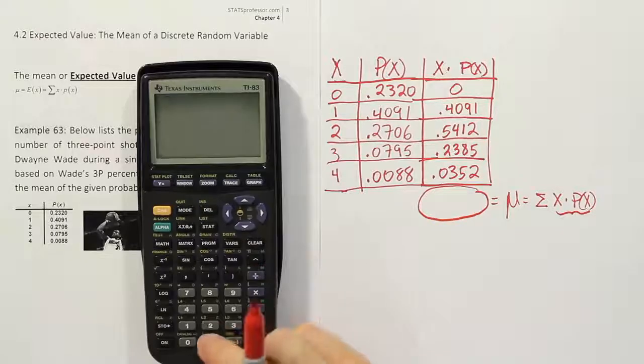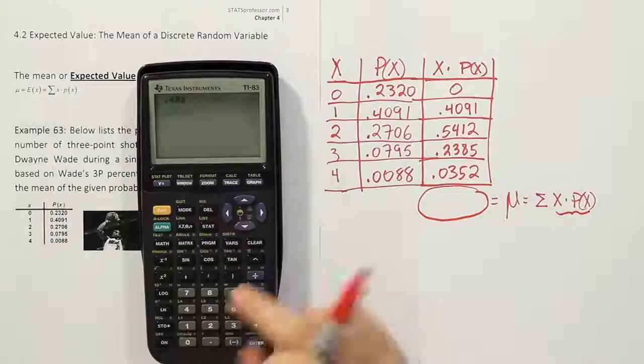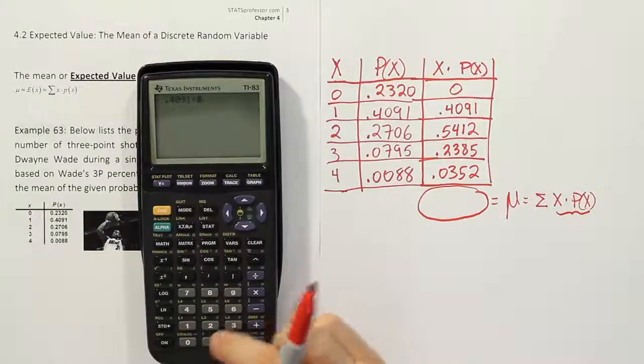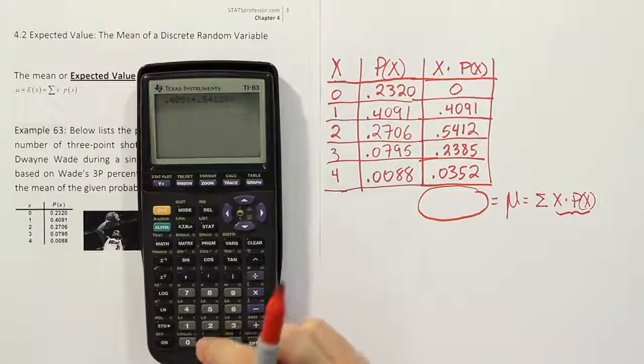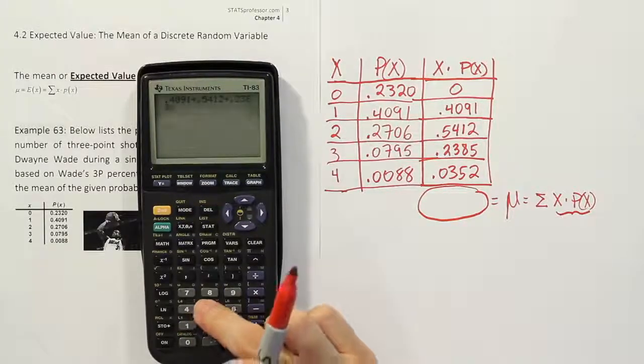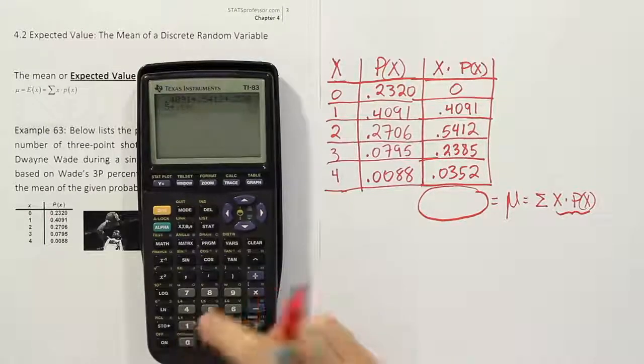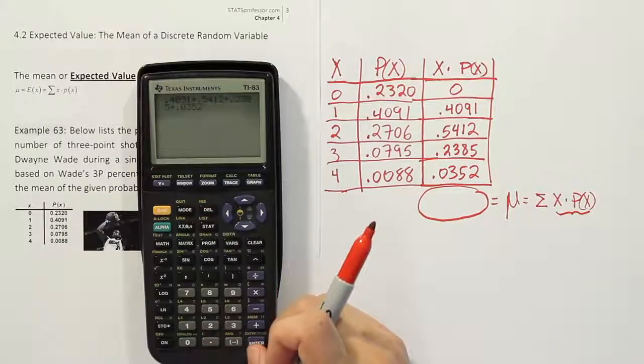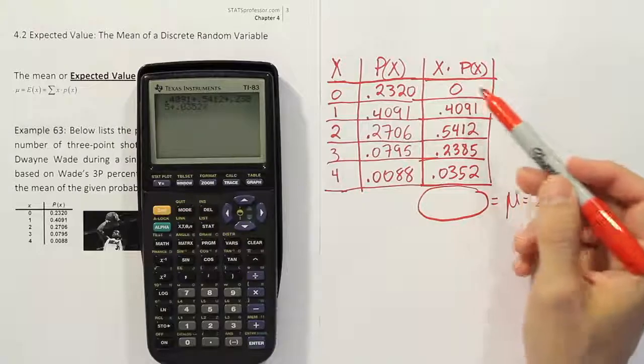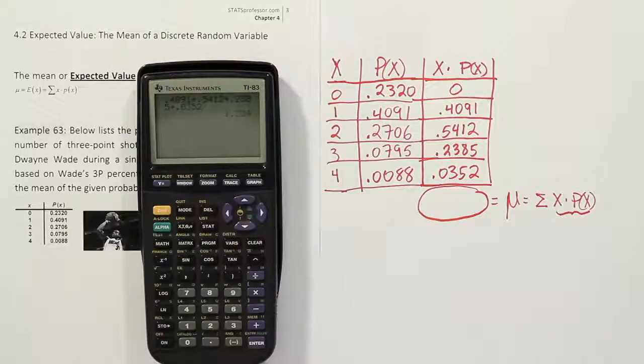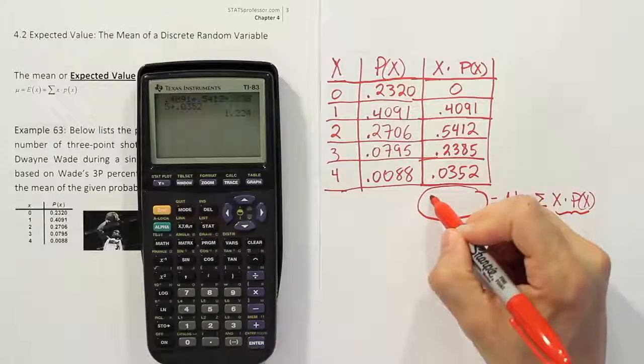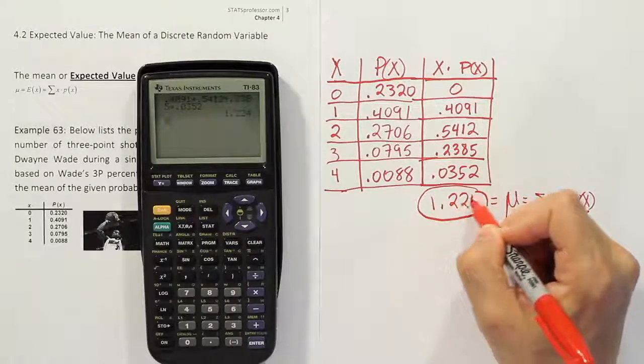We have all the numbers there, so let's do 0.4091 plus 0.5412 plus 0.2385 plus 0.0352. Okay, so those are my values, or at least the non-zero values. Obviously, I don't need to add 0 because it's going to do nothing to the total. And when I finish the problem, I get 1.224.